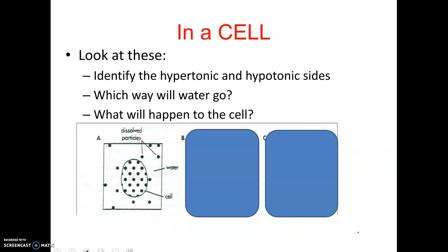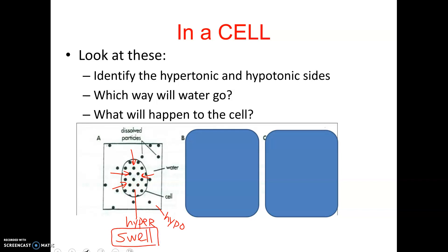Let's look at a couple more. Identify the hypertonic and hypotonic sides, which way will the water go, and what will happen to the cell — assuming dissolved particles cannot move, only water can. Looking at the picture, there's a higher concentration of dissolved particles inside the cell, so inside is hypertonic and outside is hypotonic. Water will go into the cell, basically trying to dilute it, and the cell would actually swell up — it might even explode or burst.